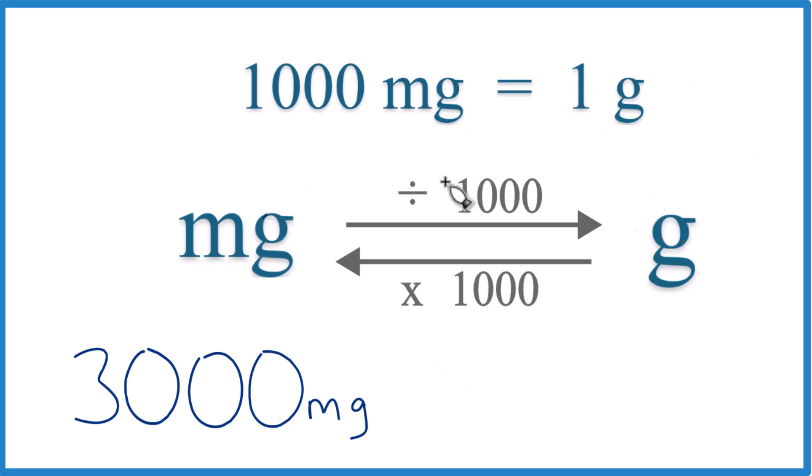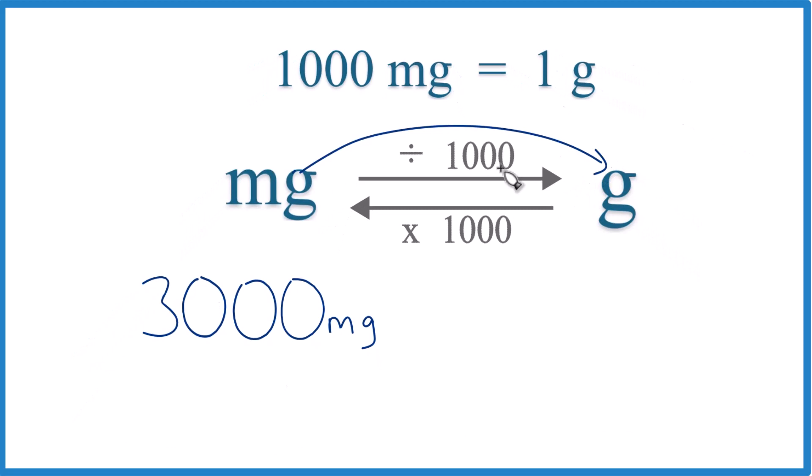If we're going from milligrams to grams, we divide by 1,000, like this. 3,000 divided by 1,000, that's 3 grams.